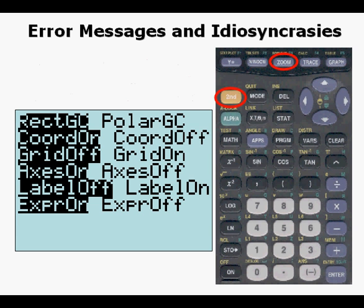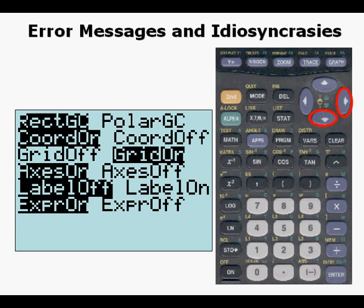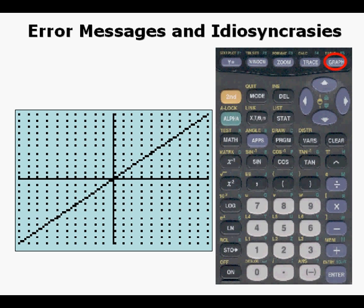One thing in graphing that's really handy with graphing calculator is sometimes to go to second zoom, which gets us to our format menu, and we can change different things there. One thing I find particularly handy is to go to grid on. What that does when we use it in graph, we can see points like we would on lattices in a graph, and so that helps us to kind of see where we are in a graph.